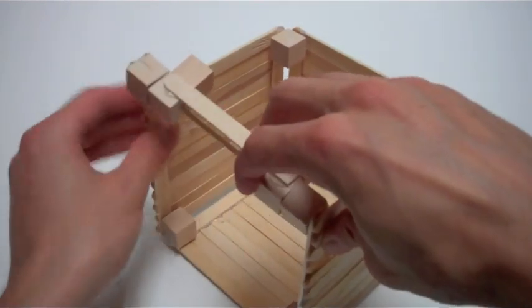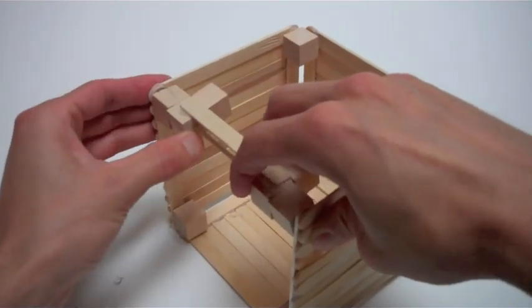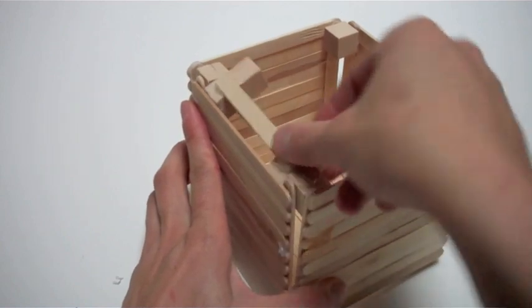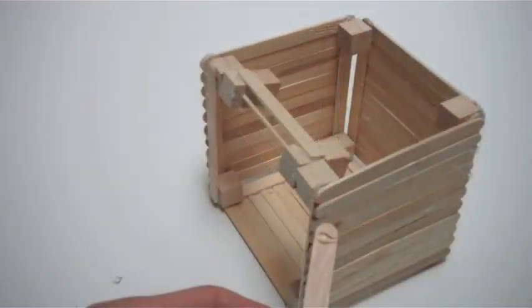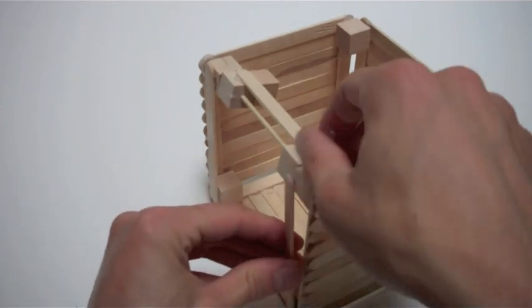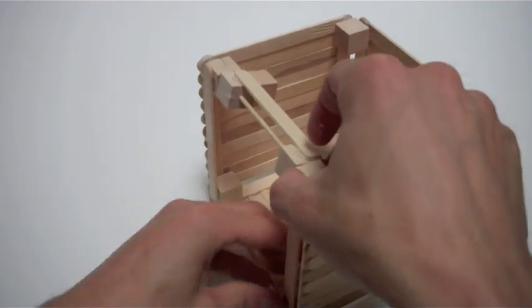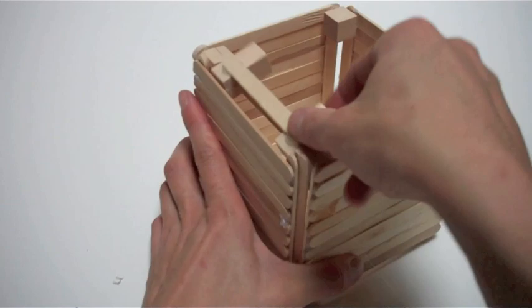Now glue the whole hinge assembly into the remaining corners of the box. Make sure that the hinge doesn't touch the side of the box. My hinge does, so I'm going to glue on two more craft sticks just to give the side a little bit more clearance from the hinge. Okay, that looks good.